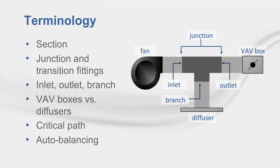The critical path has the largest pressure drop of all paths associated with the fan. Therefore all non-critical paths are over-pressurized and require resizing or the addition of dampers and orifices to balance the system. Auto balancing is a feature available within the duct configurator that allows designers to downsize non-critical paths and add dampers or orifices to use up excess pressure in the system without affecting the critical path.